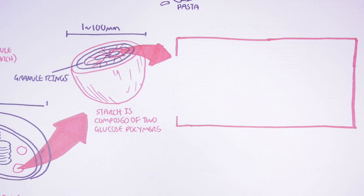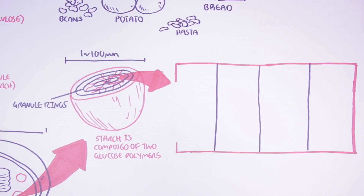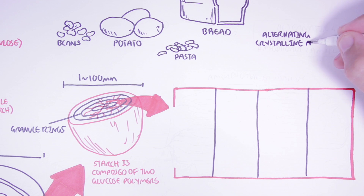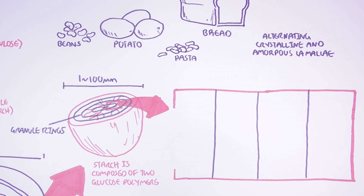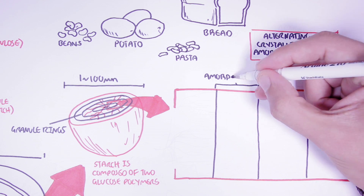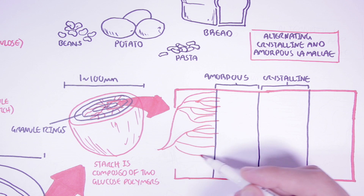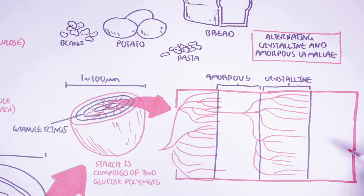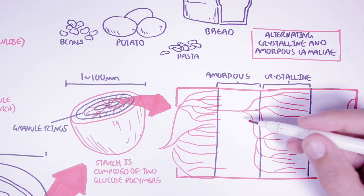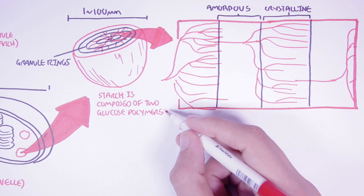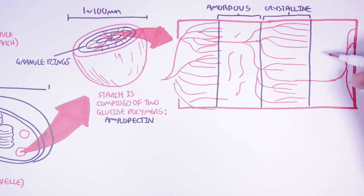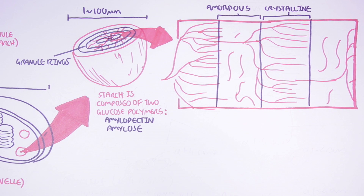The granule has granule rings with alternating crystalline and amorphous regions. Running through these regions we have the two glucose polymers. In the crystalline region, we find the branched glucose polymer running through them. Within the amorphous region we find an unbranched glucose polymer. These unbranched and branched glucose polymers are the two glucose polymers that make up starch.